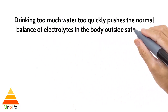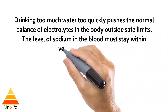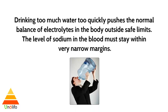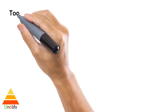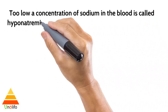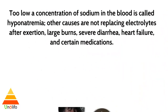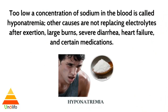Drinking too much water too quickly pushes the normal balance of electrolytes in the body outside safe limits. The level of sodium in the blood must stay within a very narrow margin. Too low a concentration of sodium in the blood is called hyponatremia. Other causes include not replacing electrolytes after exertion, severe diarrhea, heart failure, and certain medications.